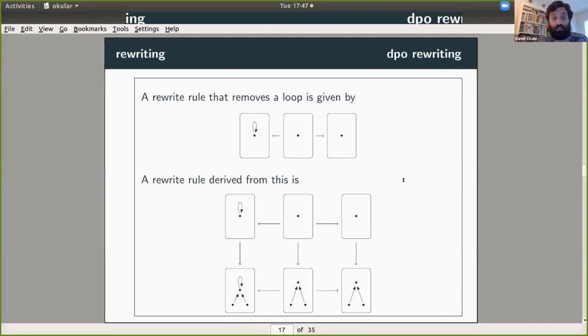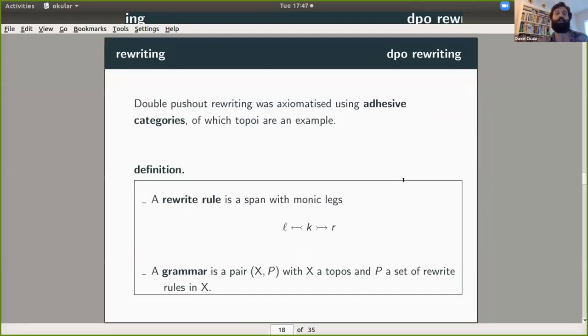So that's the idea of rewriting. And so this double pushout rewriting was axiomatized using adhesive categories. I've said this a few times now, how topoi are an example. And the idea is that as long as you have an adhesive category, then you have all the properties you want to have a good rewriting theory. But that's a whole other discussion.